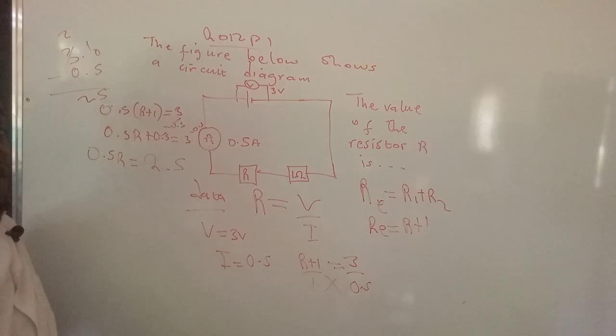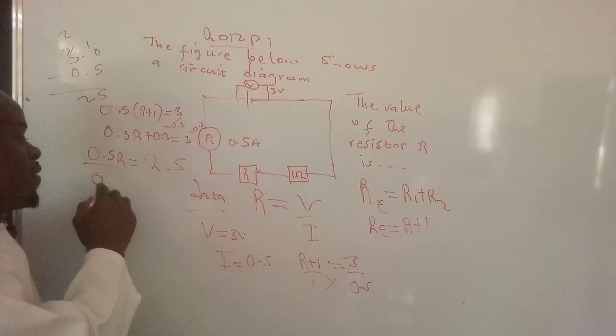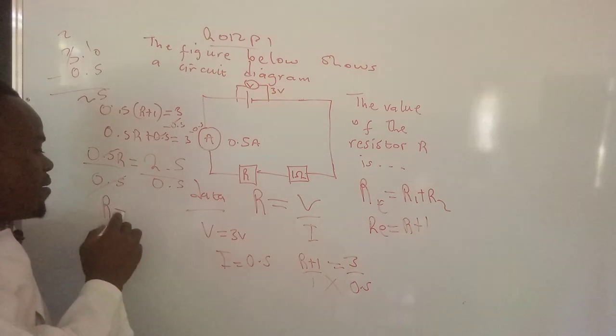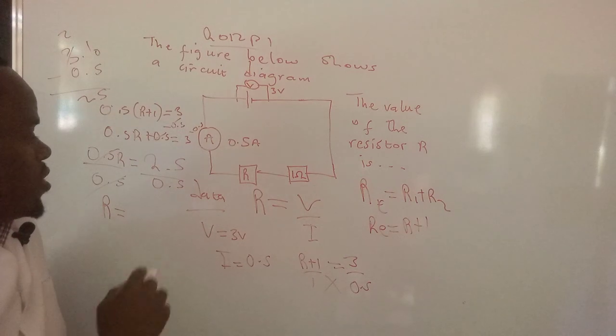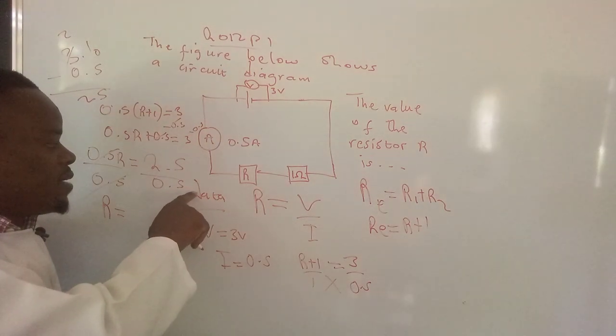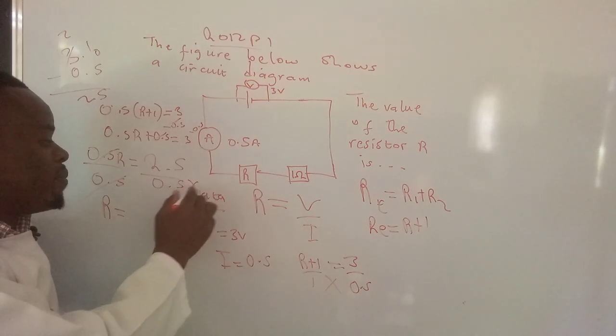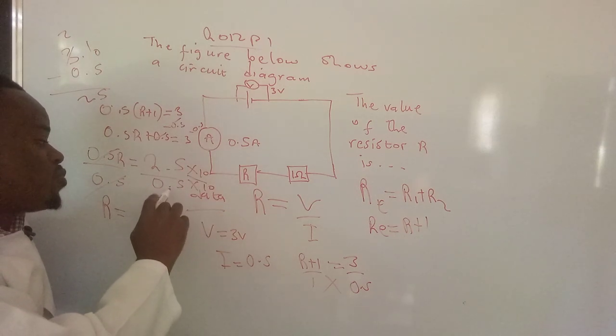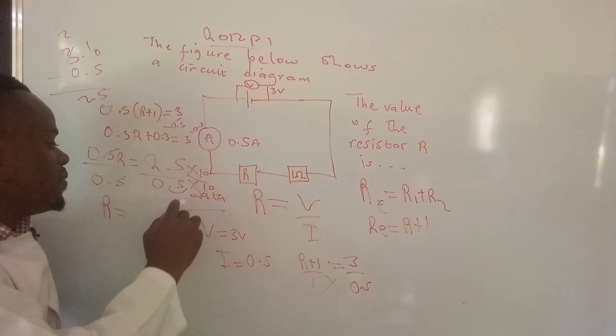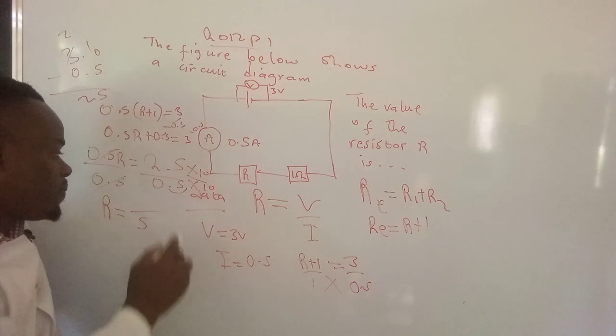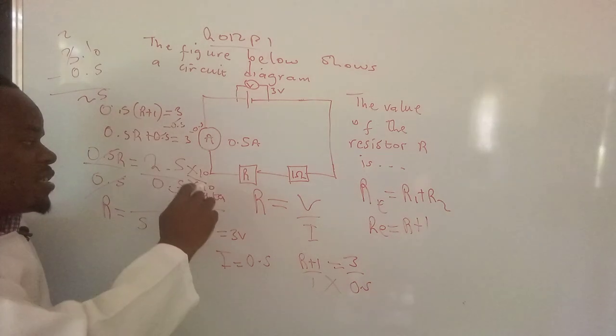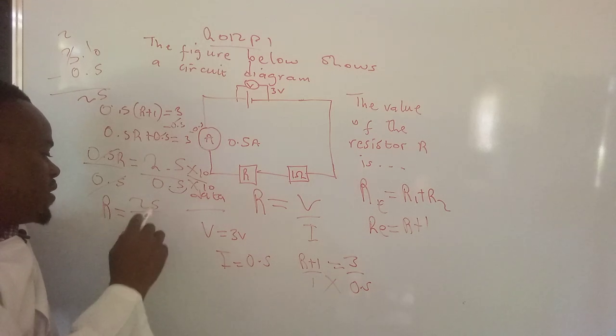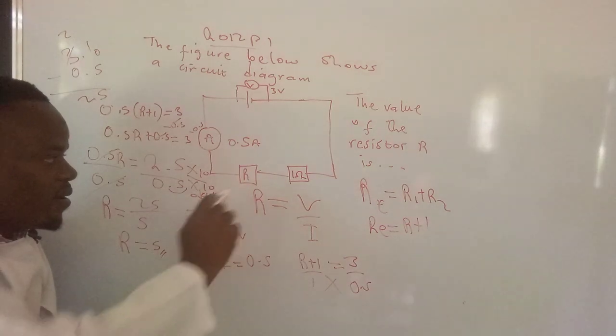So now our interest is to find the value of R, so what we do is we divide both sides by 0.5. This side we remain with R, which equals 2.5 divided by 0.5. Now for you to resolve this, consider the number of decimal places at the bottom. There is one decimal place, so we multiply by 10. What you do at the bottom is what you do on top. So when you multiply 0.5 by 10, the decimal point will move to the right, so we're going to have 5. On top here, the decimal point will move to the right as well, so that becomes 25. So 25 divided by 5, that's 5. So now R equals 5.